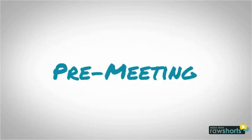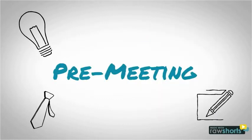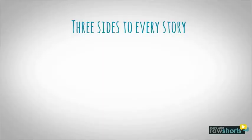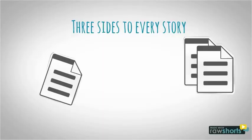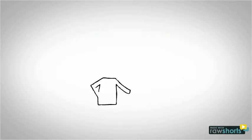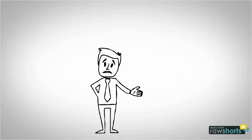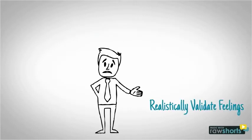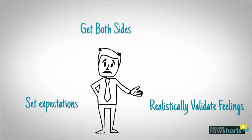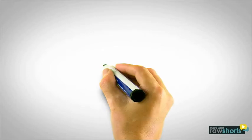Here we'll talk about what happens in the pre-meeting. It is said that there are three sides to every story — each side and then the truth. This is true in this situation as well. Hear out both sides of the situation intentionally prior to the meeting, separately. Validate their experiences and feelings when you talk to them. Make sure to also set expectations that there will probably need to be concessions, as no one is the perfect roommate and they are probably doing things that annoy the other person.